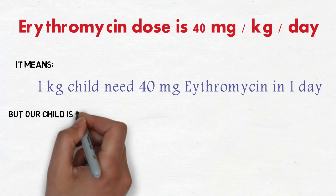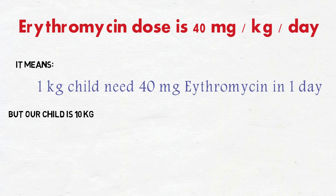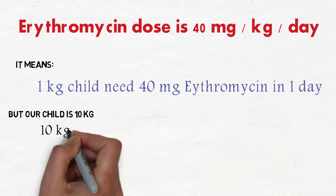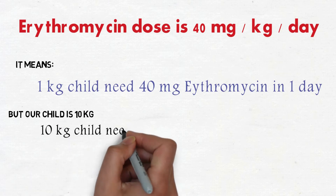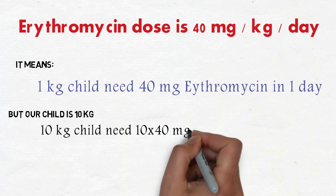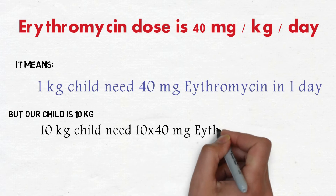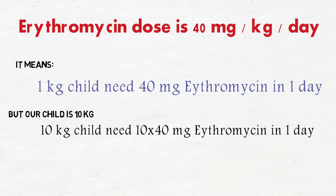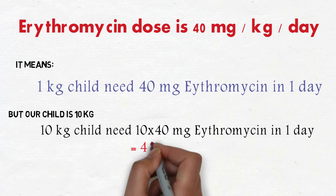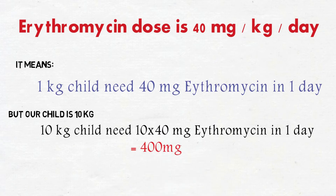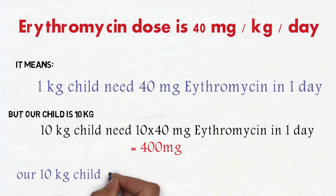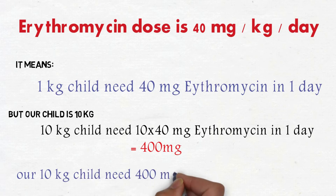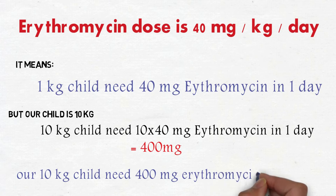But our child is 10 kg. A 10 kg child needs 10 × 40 mg of erythromycin in one day, which is equal to 400 mg. So our 10 kg child needs 400 mg of erythromycin per day.